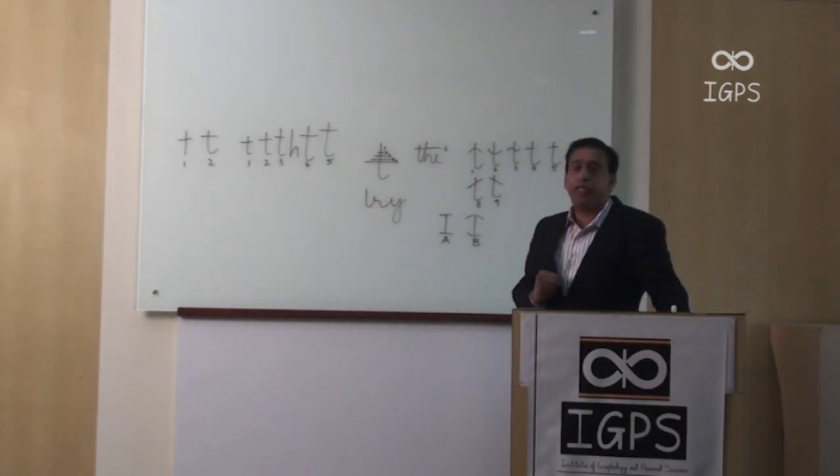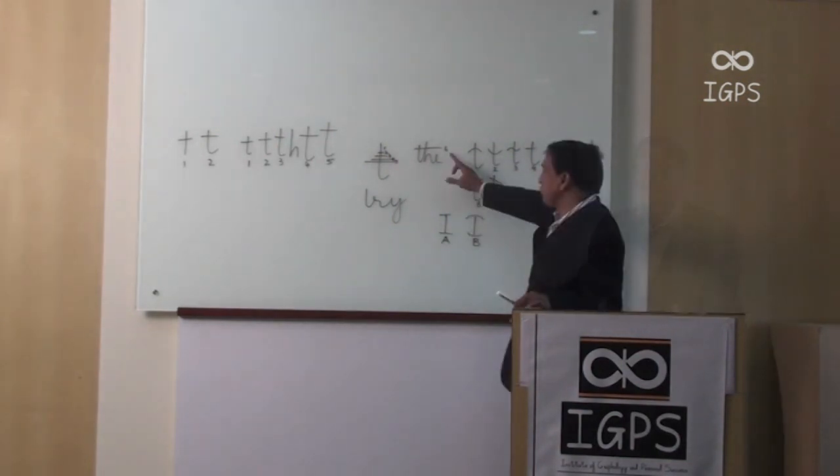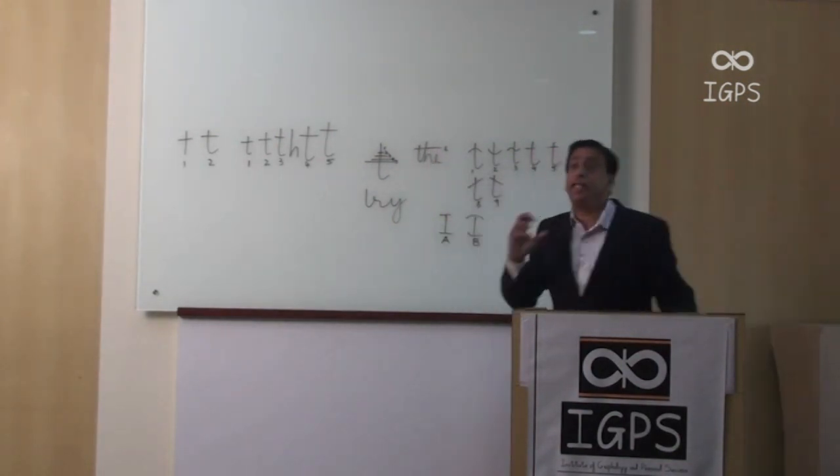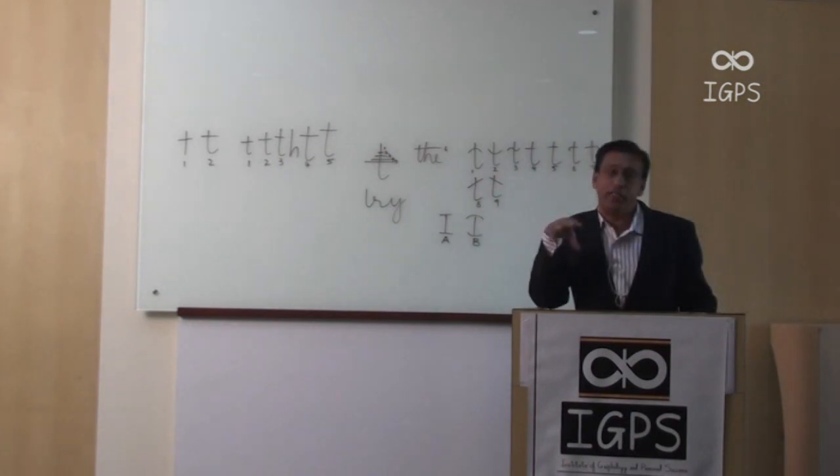Fifth one, a very good strong crossbar. Sixth one, this crossbar is hiding other letters. That means he is hiding few facts, few realities. He is not revealing all the realities.